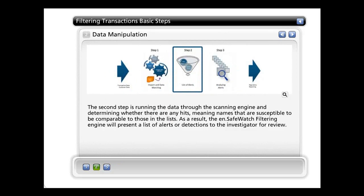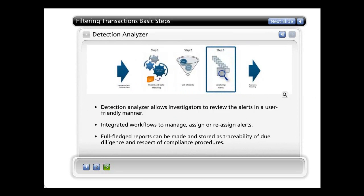At the end of the scanning process, the ranking and status of the violation will be calculated taking into account the configuration and the known good entities present in the engine. As a result, the EN SafeWatch filtering engine will present a list of alerts or detections to the investigator for review. In the third step, the application is used to help the investigator review the alerts generated by the EN SafeWatch filter detection engine. Eastnets has developed a detection analyzer that allows investigators to review alerts in a user-friendly manner, with full details including the lists against which the detection was made. Investigators also have an integrated workflow process to manage, assign, or reassign detection alerts. Finally, full-fledged reports can be made and stored as traceability of due diligence and respective compliance procedures.